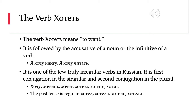So we can say я хочу книгу — 'I want a book' — where 'book' is the direct object. Or я хочу читать — 'I want to read.' It's the same construction.